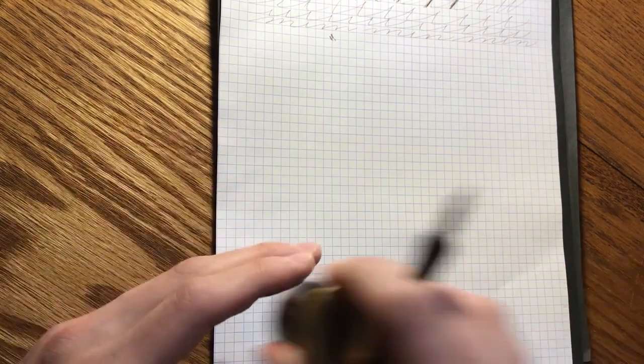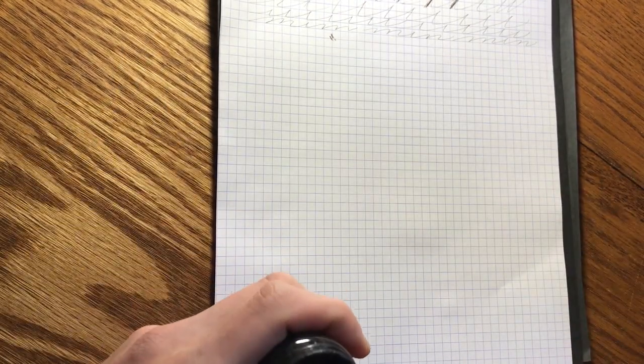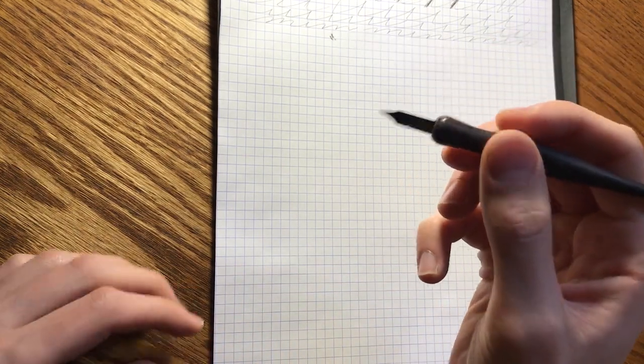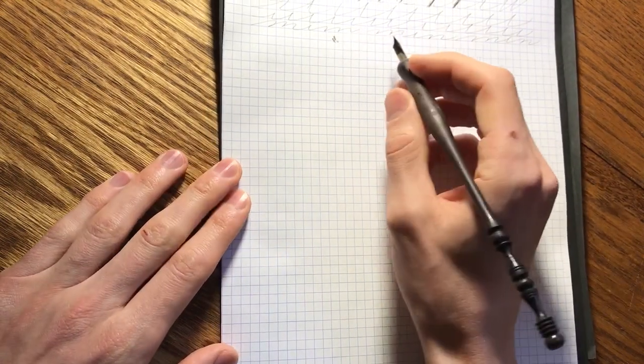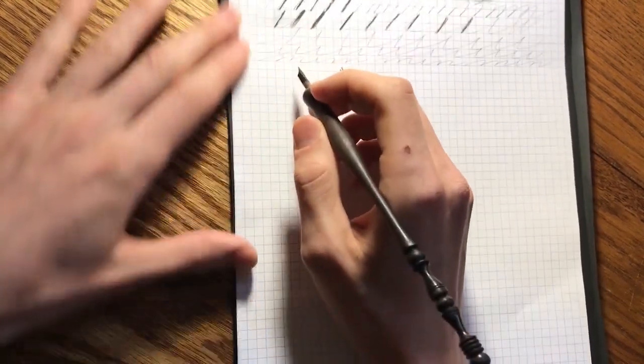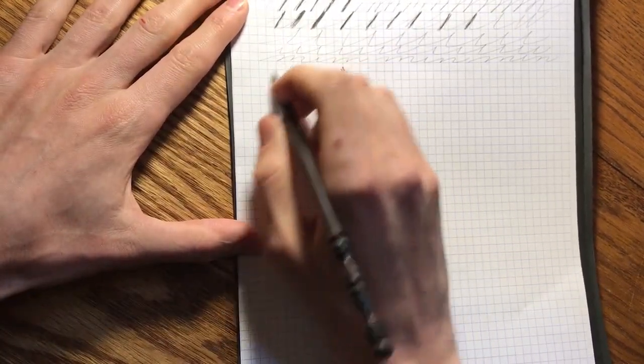I put ink on my pen, you can't really see that well, and I'll just do some circles across the page, some big ones.